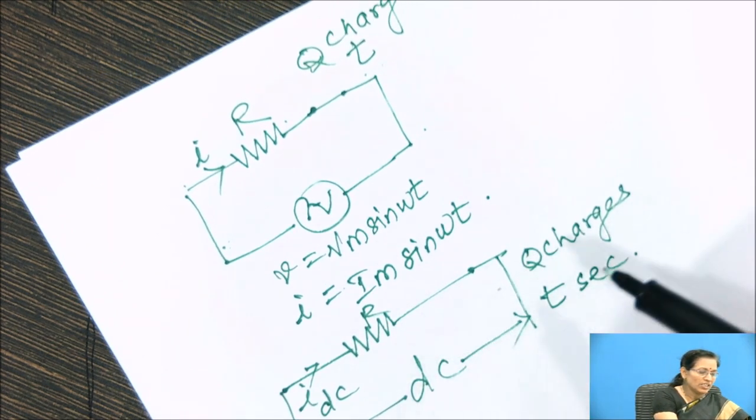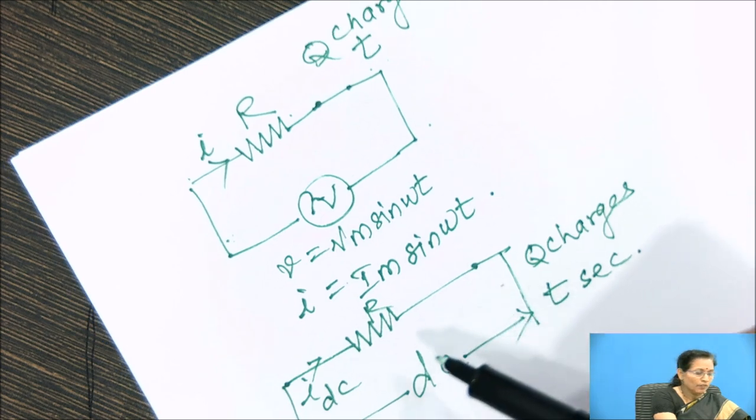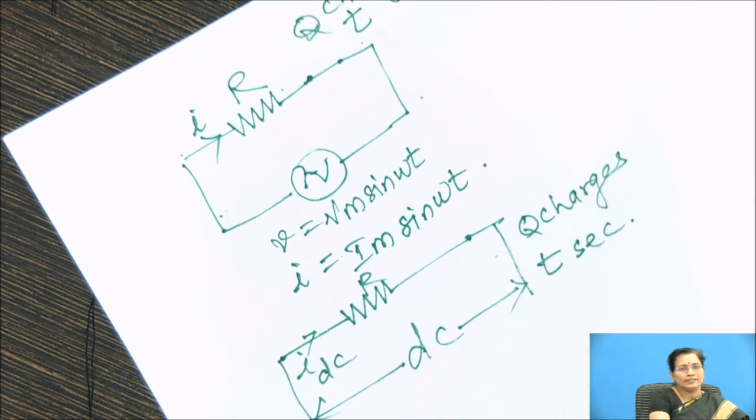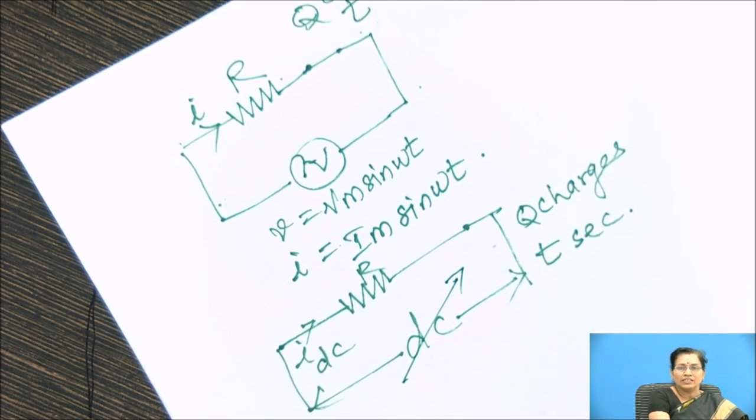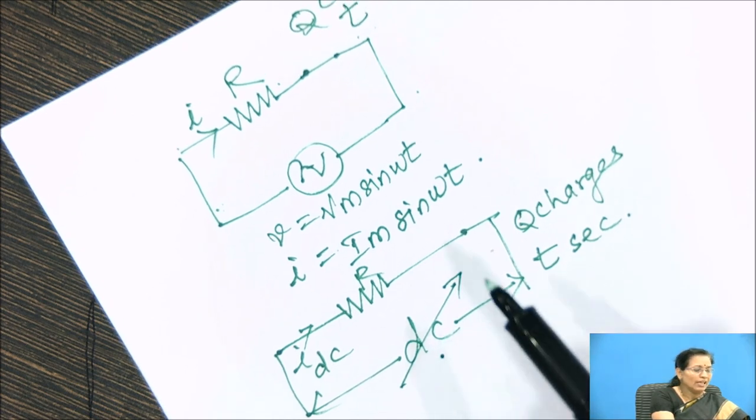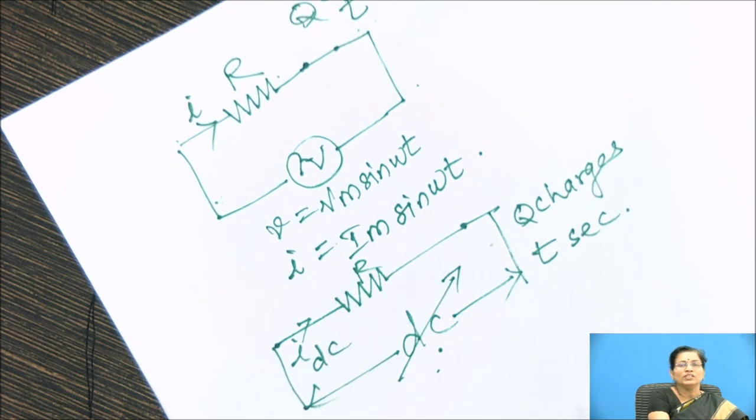This Q charges move in time t will be same for AC and DC. So this voltage we have to adjust. So this DC voltage is the average value of this AC voltage. So according to this definition, this DC voltage is nothing but the average value of this AC voltage.